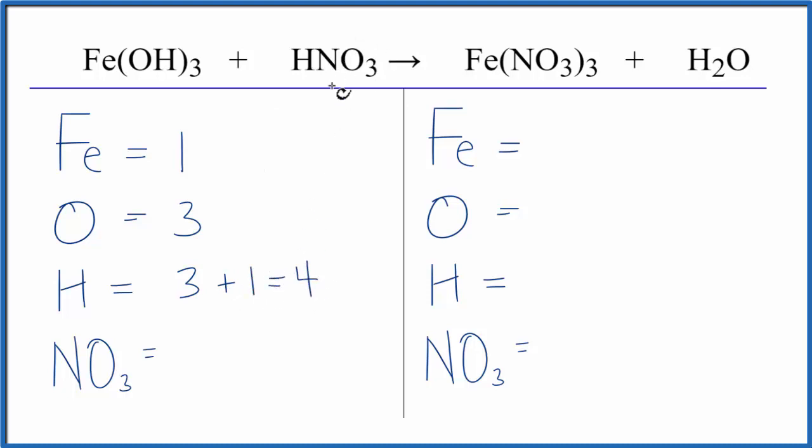And you'll notice I've left this NO3 by itself. This is a polyatomic ion, it stays together. We have an NO3 here, and we have three NO3s here. So we're going to count that as just one item. It'll make balancing much, much easier.